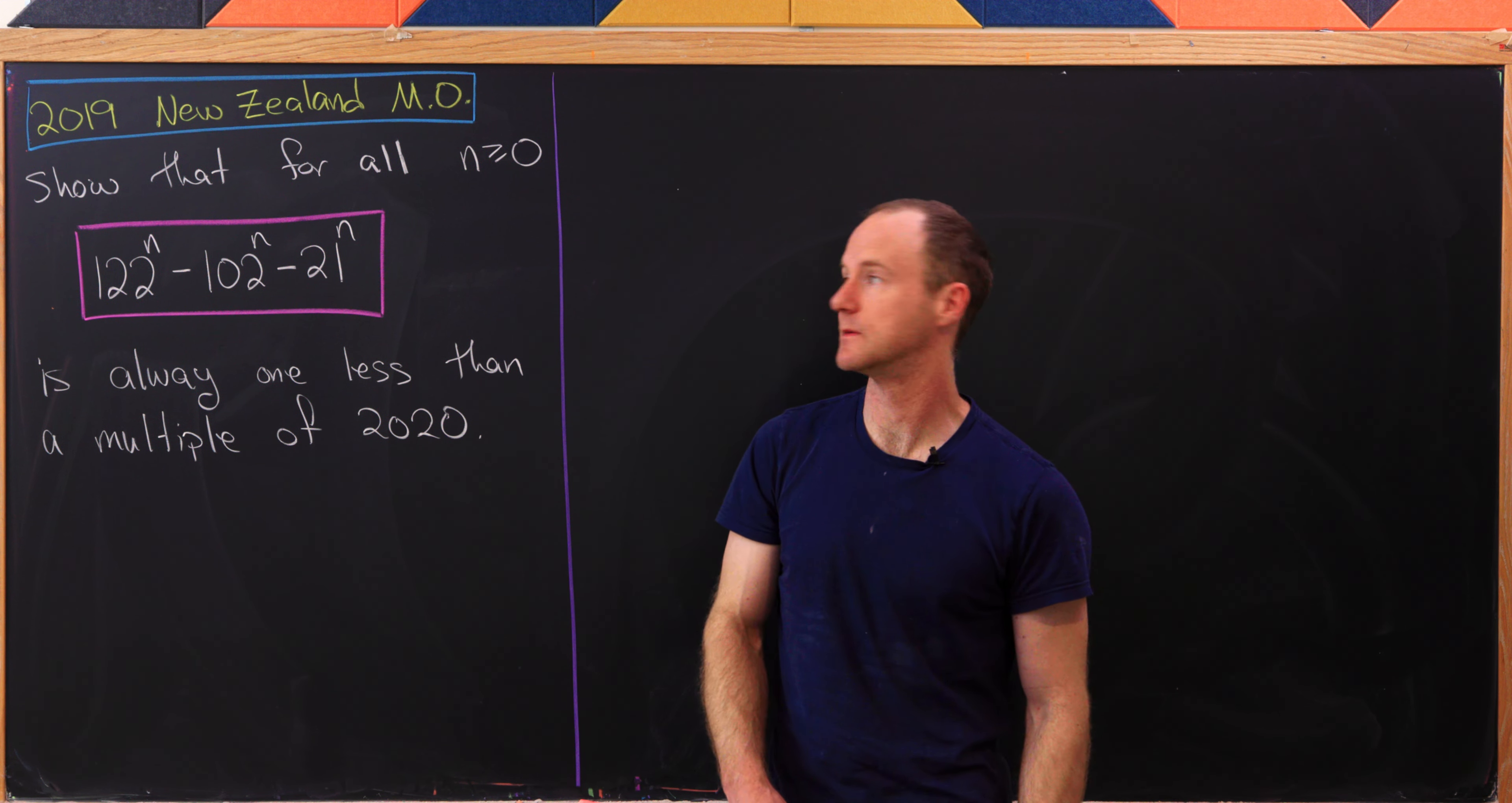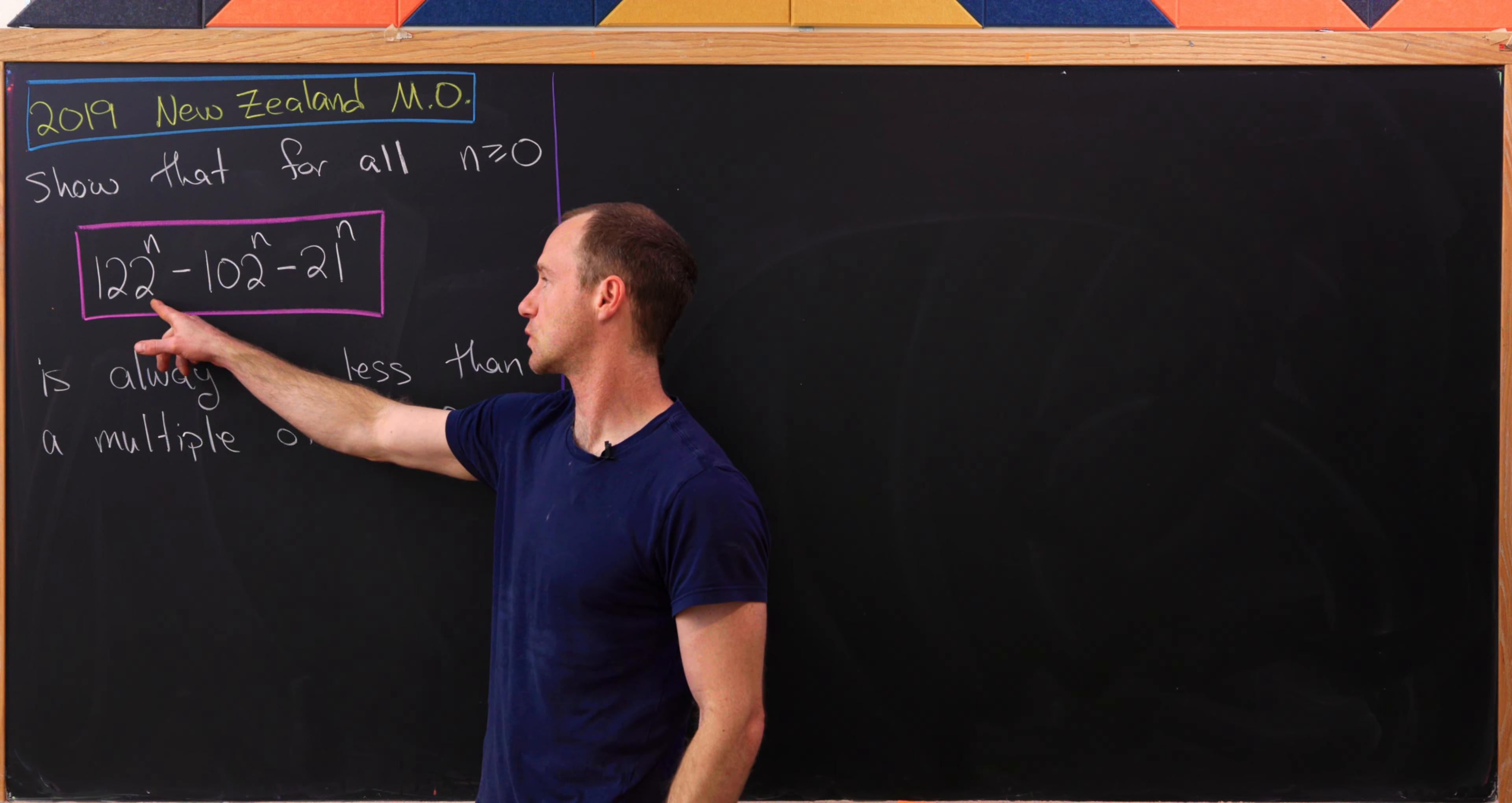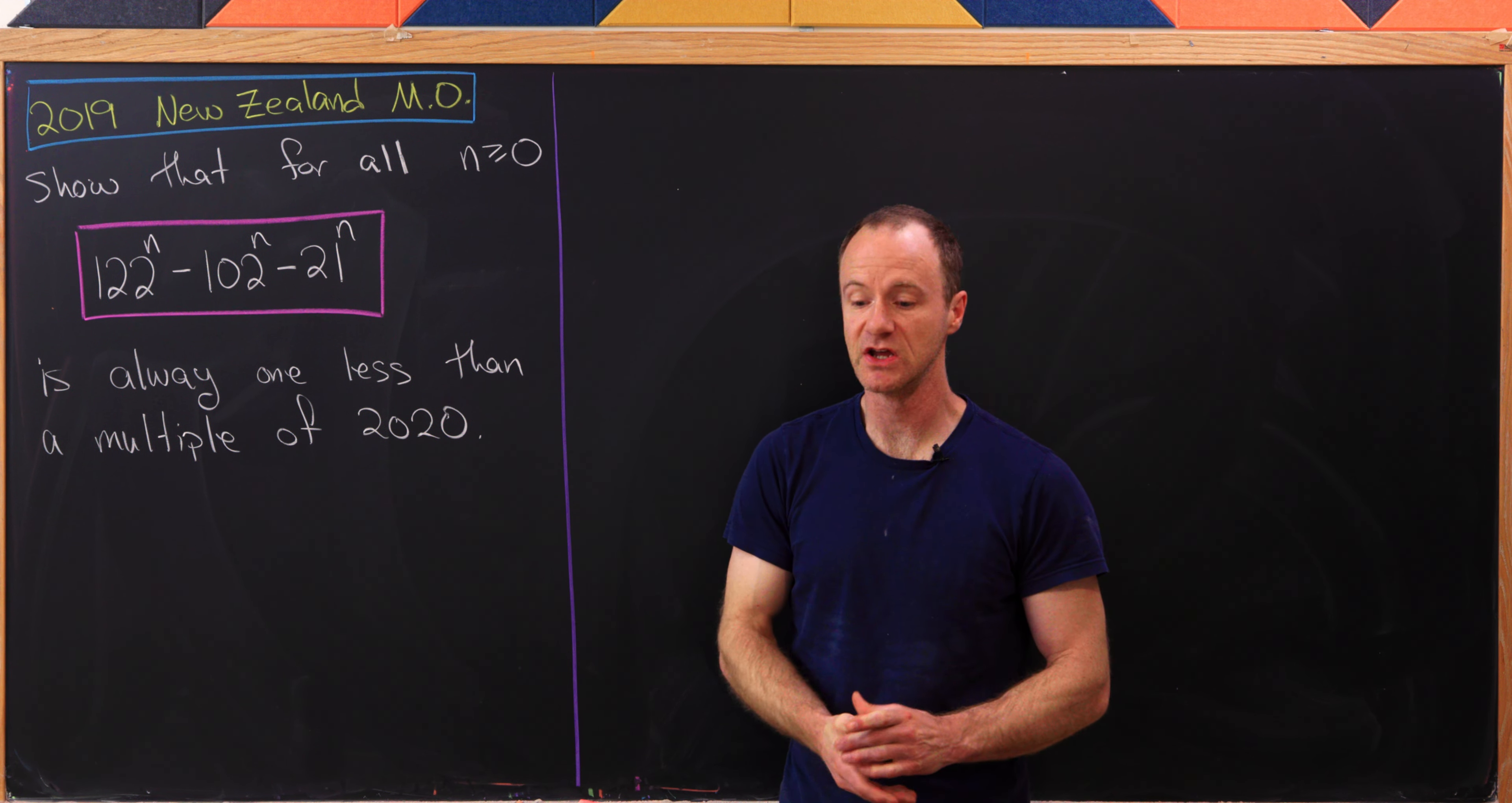So let's look at the problem. Let's show for all integers n that are bigger than or equal to zero, this expression 122^n - 102^n - 21^n is always one less than a multiple of 2020.